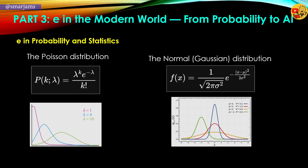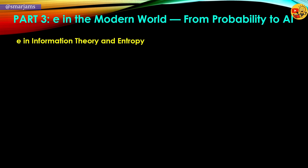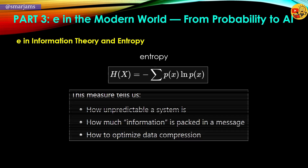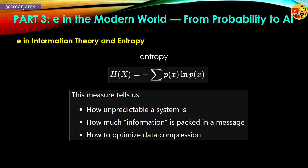In the 1940s, Claude Shannon placed e at the center of communication theory by defining entropy using logarithms with base e. This concept measures uncertainty, tells us how surprising a message is, and guides everything from file compression to secure digital communication. Without fanfare, e became the quiet mathematics behind how we store, share, and protect information.